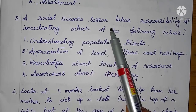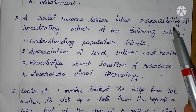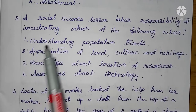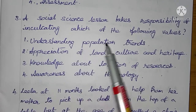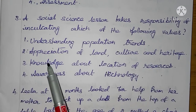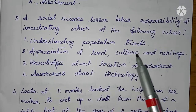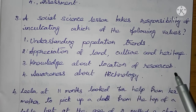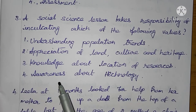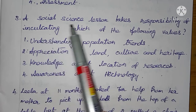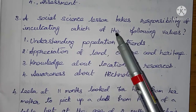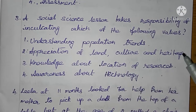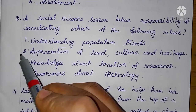A social science lesson takes responsibility of inculcating which of the following values? 1. Understanding population trends, 2. Appreciation of land, culture and heritage, 3. Knowledge about location of resources, 4. Awareness about technology. For a social science lesson, the right answer is option 2: Appreciation of land, culture and heritage.